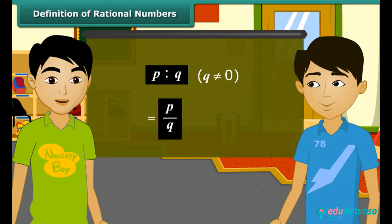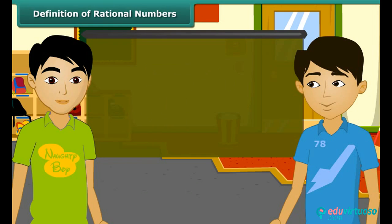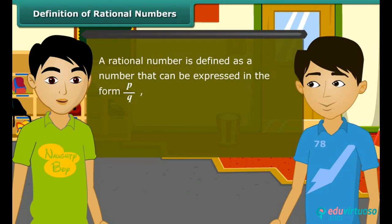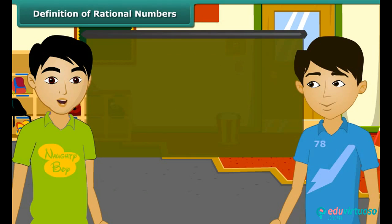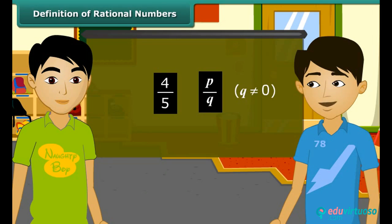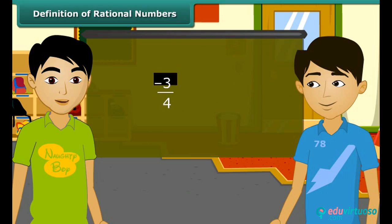This is the form in which rational numbers are expressed. A rational number is defined as a number that can be expressed in the form P by Q, where P and Q are integers and Q is not equal to 0. Rahul, now you tell — is 4 by 5 a rational number? Yes, 4 by 5 is a rational number because it is in the form P by Q where Q is not equal to 0. And is minus 3 by 4 also a rational number? Yes, because P is equal to minus 3 and Q is equal to 4, and both are integers.